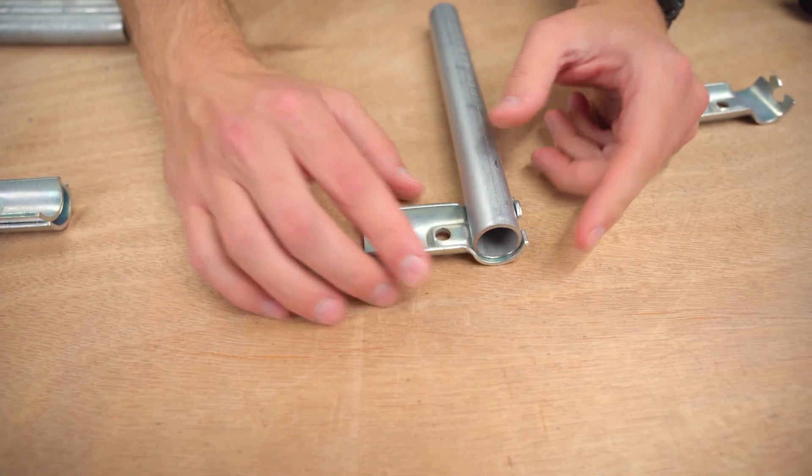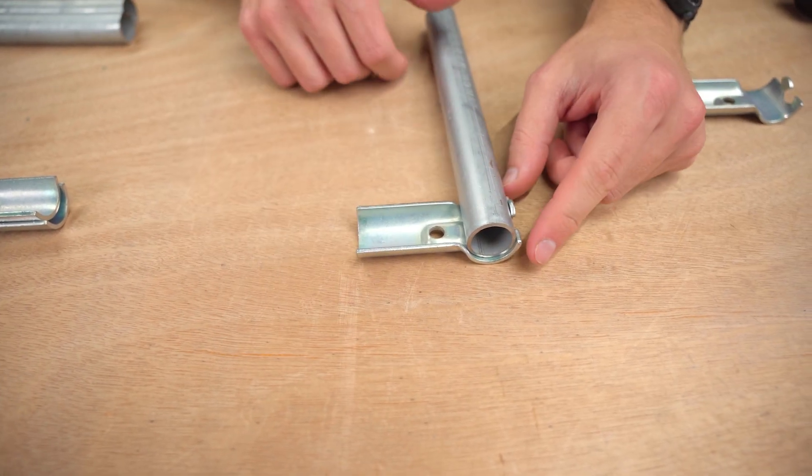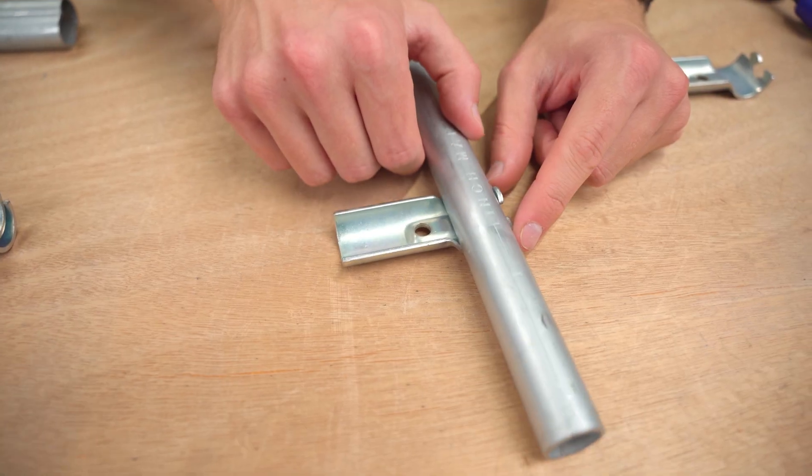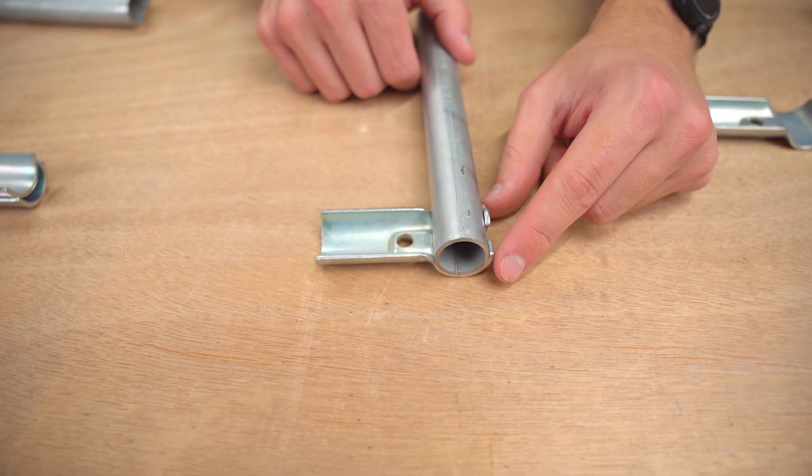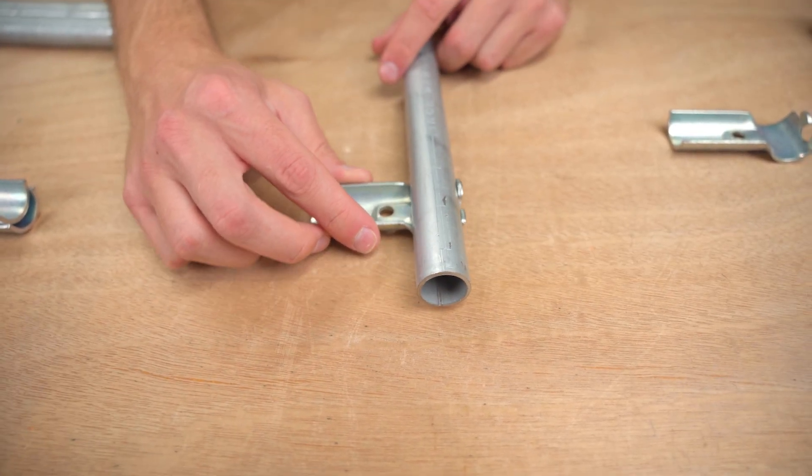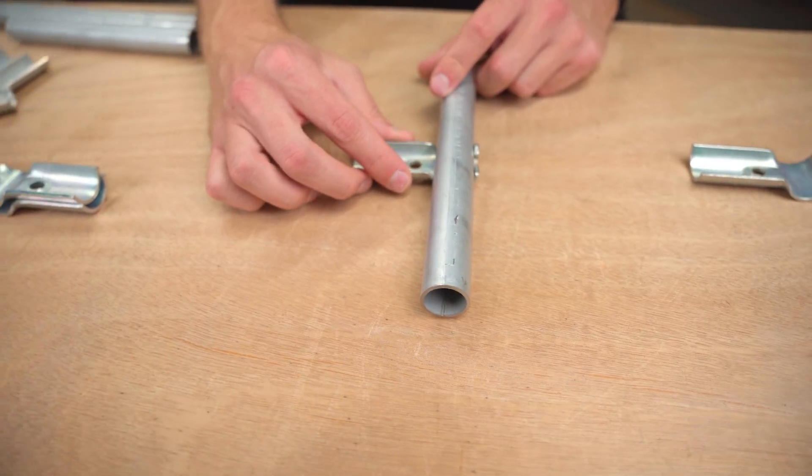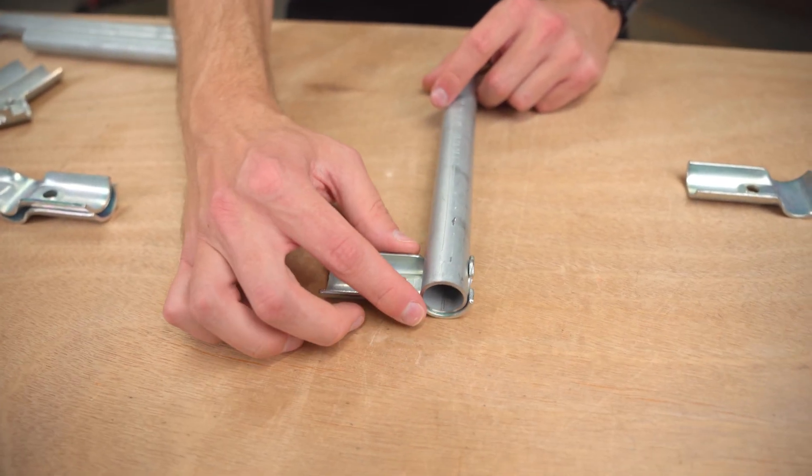One of them is going to be the fact that you have through pipe connections, which basically just means that this piece of conduit can run continuously through the connector and you can essentially clamp the T-connector anywhere along this piece of conduit, even flush with the end.